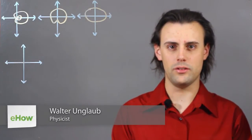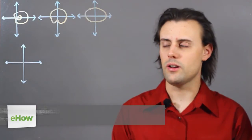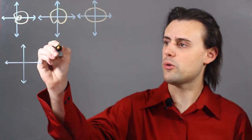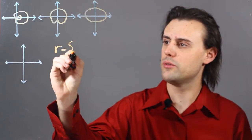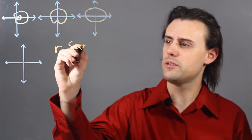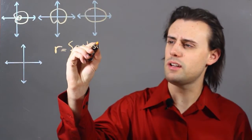Hello, my name is Walter Unglaub, and this is how to graph Limassons. A Limasson is described in polar coordinates by the analytic equation r, being the radius, is equal to a plus minus b times sine of theta.